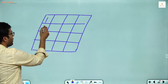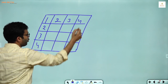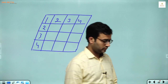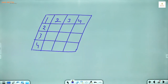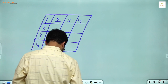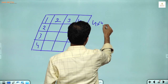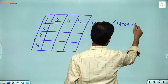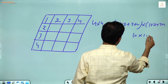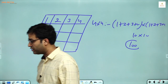In the given figure, this is 1, 2, 3, 4 and 1, 2, 3, 4. Find the number of parallelograms — write in the comments. This is a 4 by 4 figure: bracket start 1 plus 2 plus 3 plus 4, into second bracket start 1 plus 2 plus 3 plus 4. So in this given figure we have 10 into 10 equals 100 parallelograms.